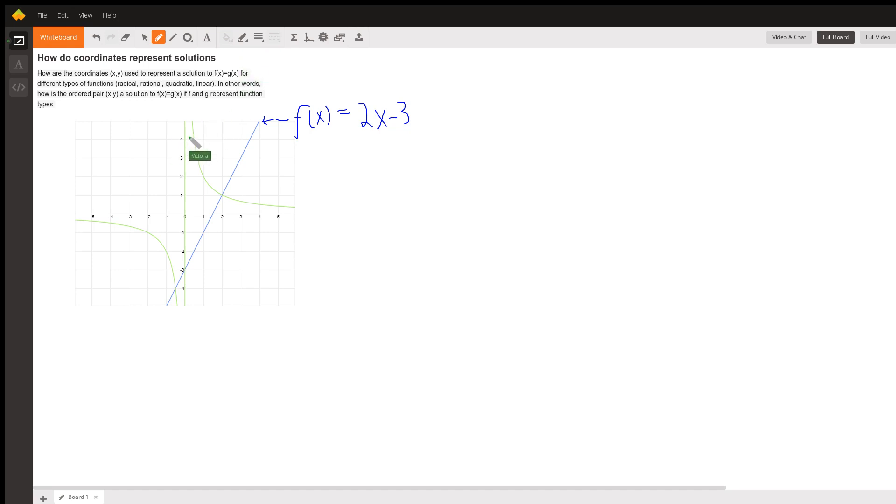Now, this one in green, we'll call it g of x, and its function or equation is 2 over x. Notice when x is 2, y is 1. When x is 1, y is 2.